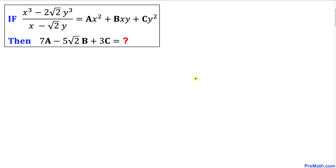Welcome to pre-math. In this video tutorial we are going to work on this if-then statement. The problem is: if x³ minus 2 times √2 times y³, divided by x minus √2y, equals ax² plus bxy plus cy², then we are going to find the value of 7a minus 5√2b plus 3c. Let's go ahead and get started with the solution.